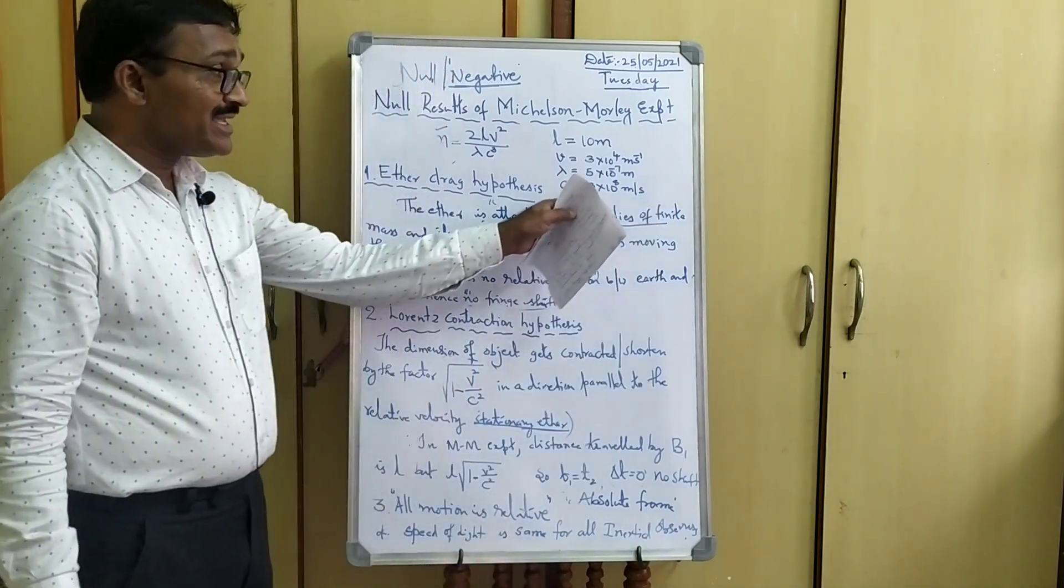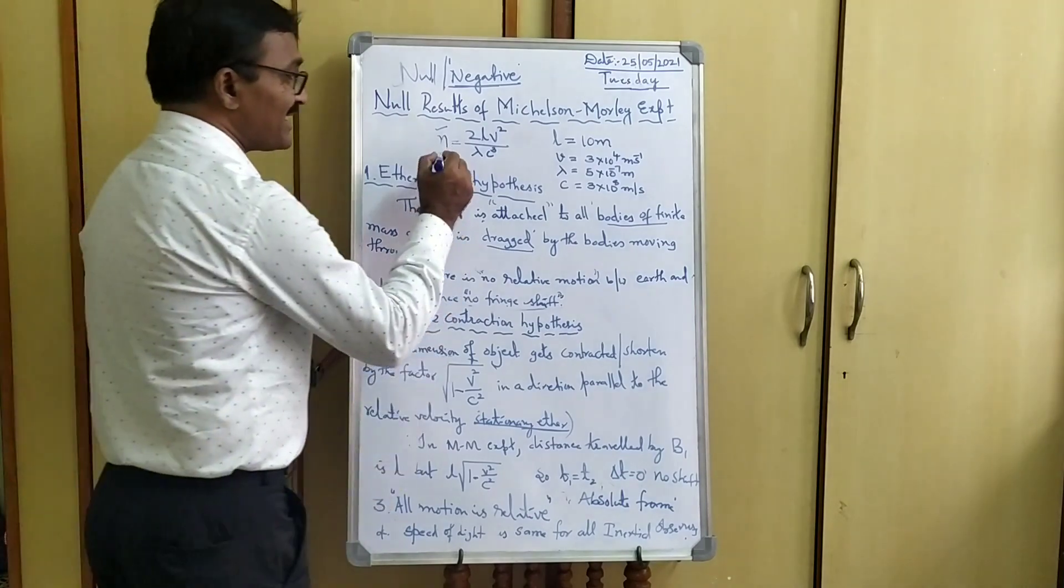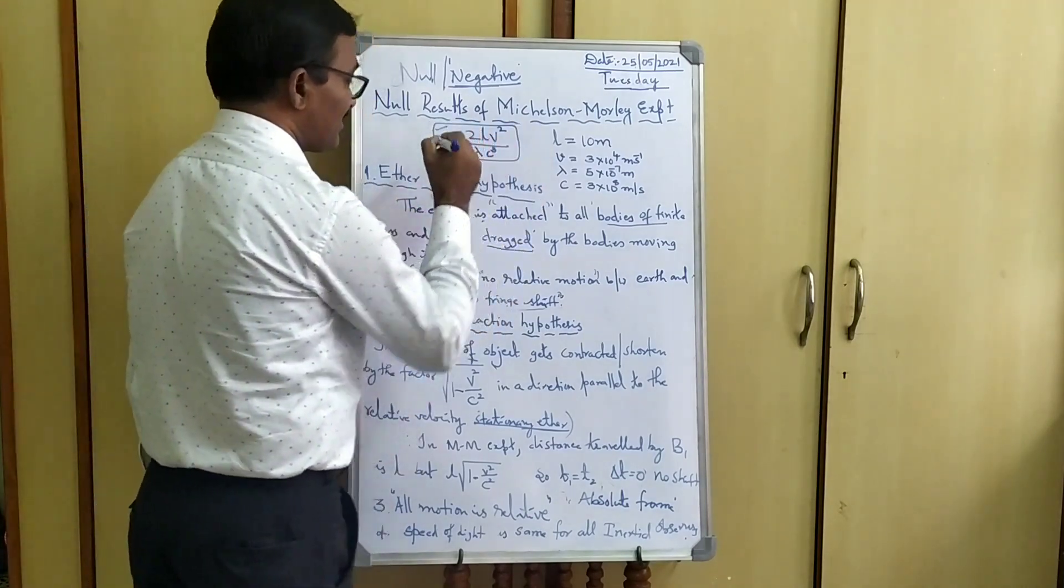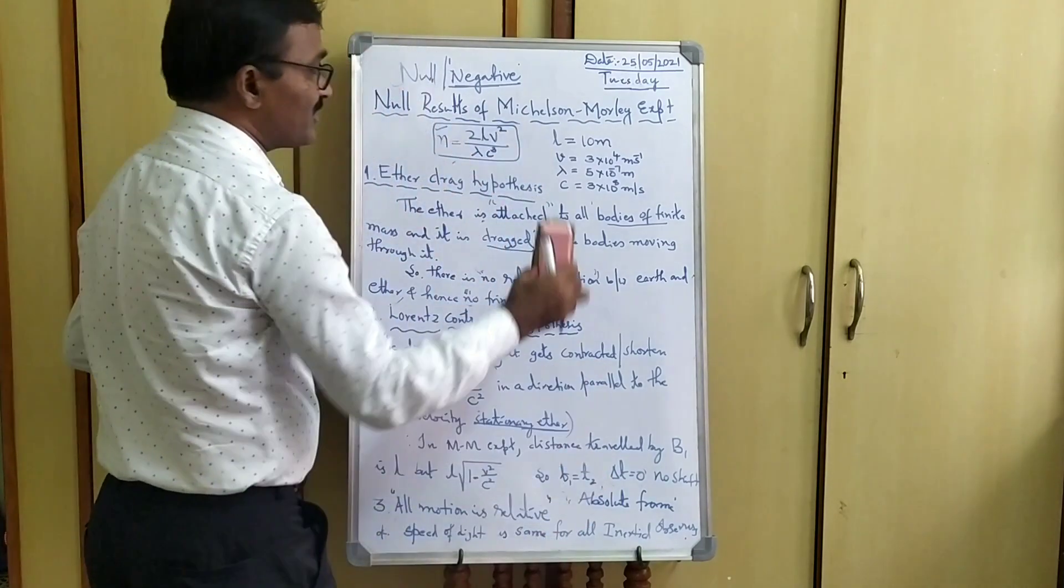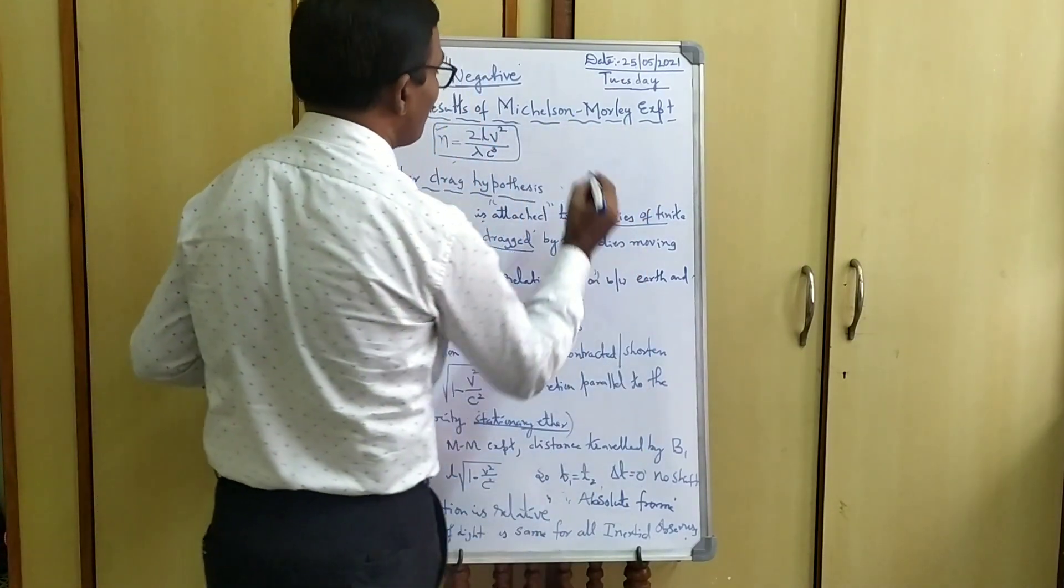When these values are kept in this equation, in this expression, we have got according to theory from the Michelson-Morley Experiment,